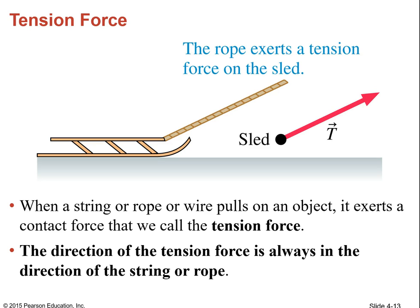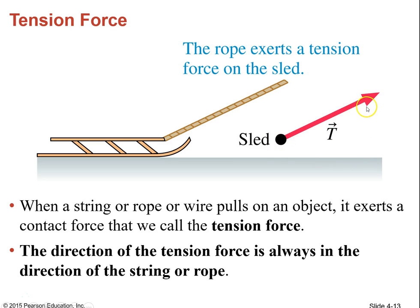Tension, like from a rope, can act at an angle. An angled tension force is a combination of two forces — one that goes horizontal to the ground and one that goes up in the air. Those two components together make up the tension force.